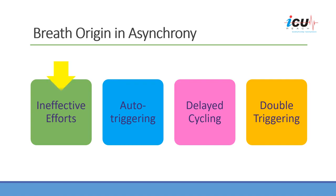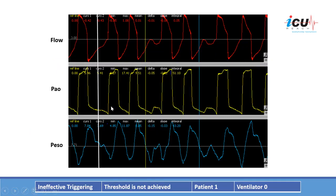The first type is ineffective efforts. We will look at three different graphs: flow over time, pressure over time, and esophageal pressure over time. We will start by looking at the esophageal pressure over time.